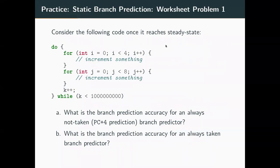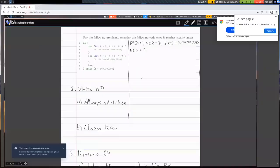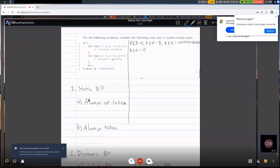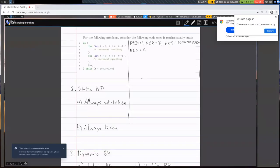This leads to the practice on the worksheet. For this code, what is our prediction accuracy for always-not-taken and always-taken branch predictors? The first thing to do is deconstruct this code into actual MIPS or pseudo-MIPS, so we can count the number of branches we'll encounter and how many are predicted correctly versus not. The key insight is that for loops are compiled a little differently than you expect.